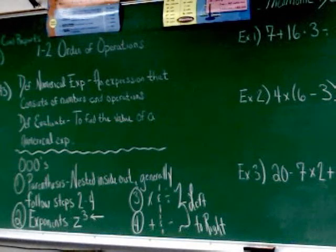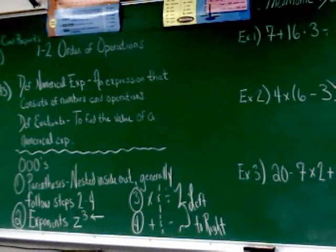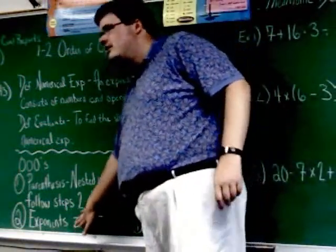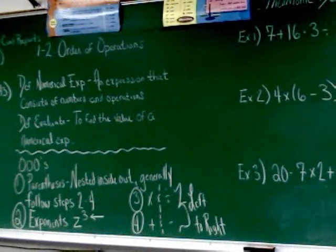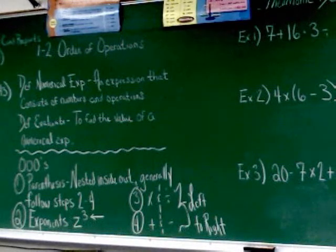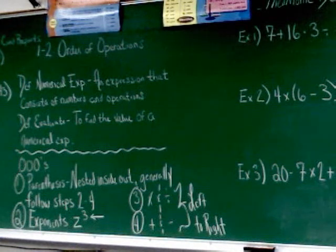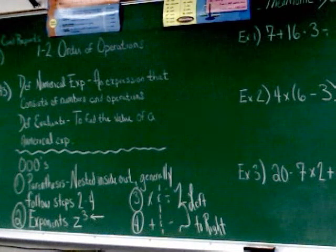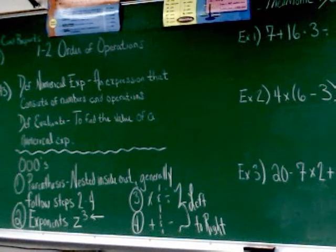Step two is exponents. Now, I'm refreshing your memory here with a little vocabulary which is the only reason I put this down here. I have the power z to the third here or z cubed. I want to remind you that that whole thing is called the power. The exponent is just the three. That's what the exponent is. Just to refresh your memory. I'm just reminding you that the three is what's called the exponent, not the whole thing.